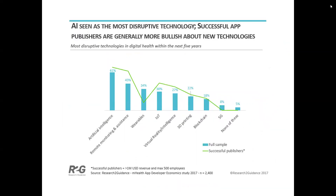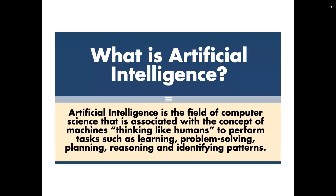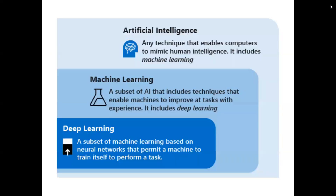AI is seen as the most disruptive technology, and successful app publishers are generally more bullish about it. Artificial intelligence is the field of computer science associated with the concept of machines thinking like humans to perform tasks such as learning, problem solving, planning, reasoning, and identifying patterns.